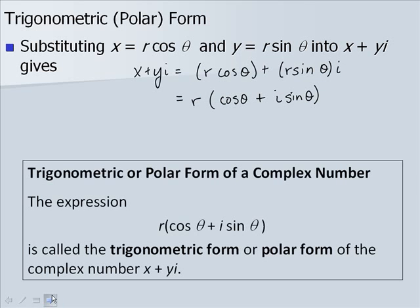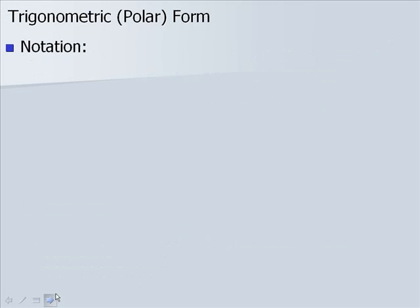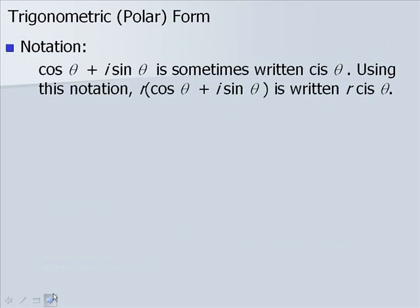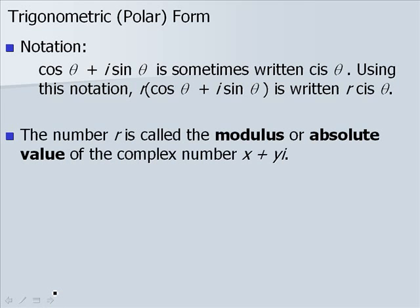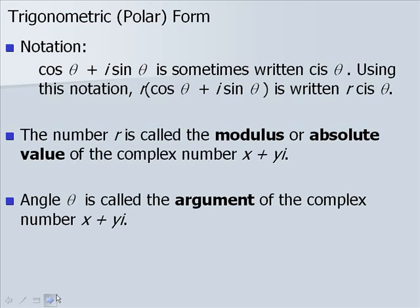We can factor out r and get r times the quantity cosine of theta plus i sine of theta. This expression is called the trigonometric form or polar form of the complex number x plus yi. The cosine of theta plus i sine of theta is sometimes written in shorthand as cis of theta, so we can rewrite our form as r cis of theta. The number r is called the modulus or absolute value, and theta is called the argument of the complex number x plus yi.